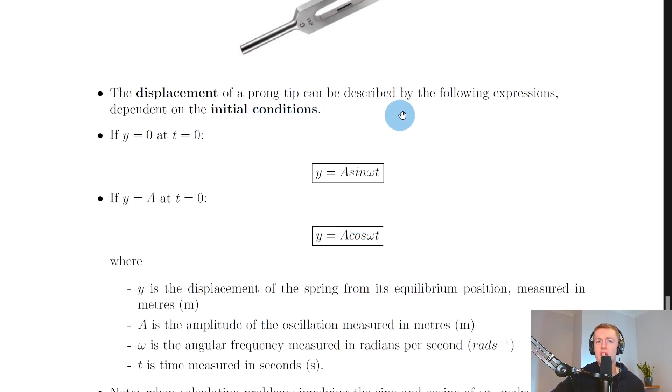The displacement of a prong tip can be described by the following expressions dependent on the initial conditions. This doesn't just apply to a prong tip, it applies to any object undergoing simple harmonic motion.